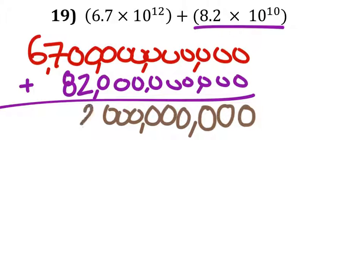Now we got 0 plus 2, which is 2. 0 plus 8 is 8. 7 plus is 7, and 6 plus is 6.